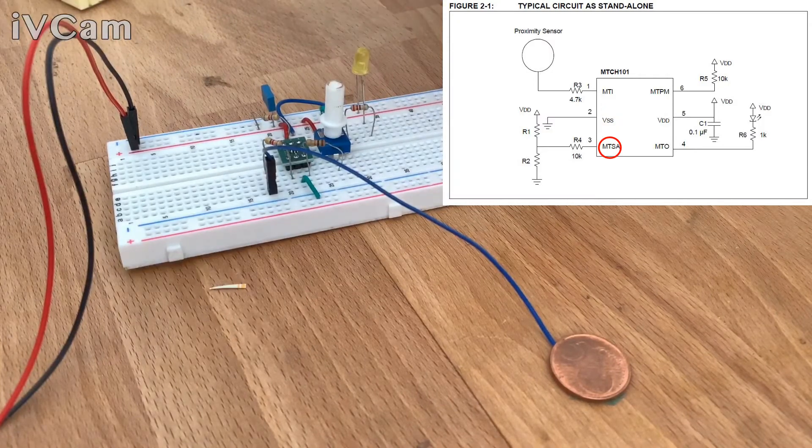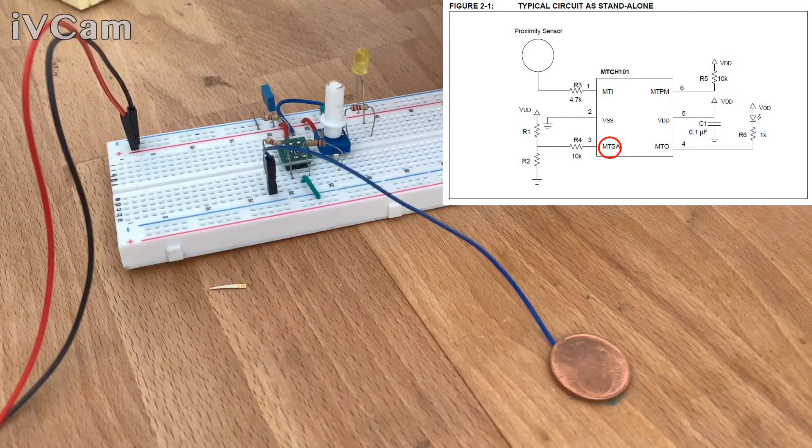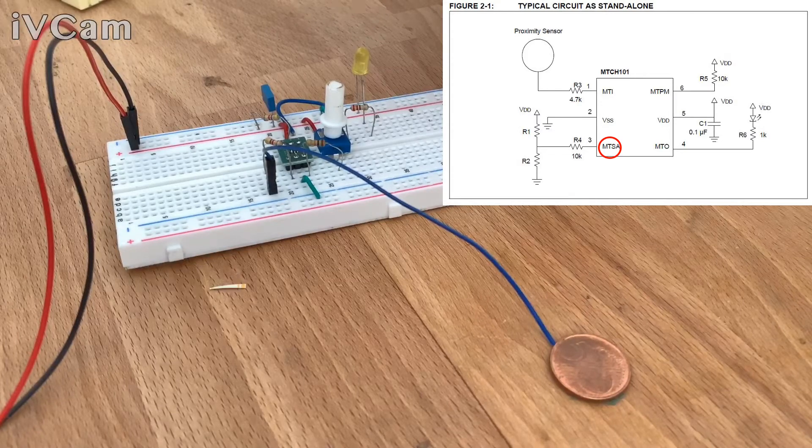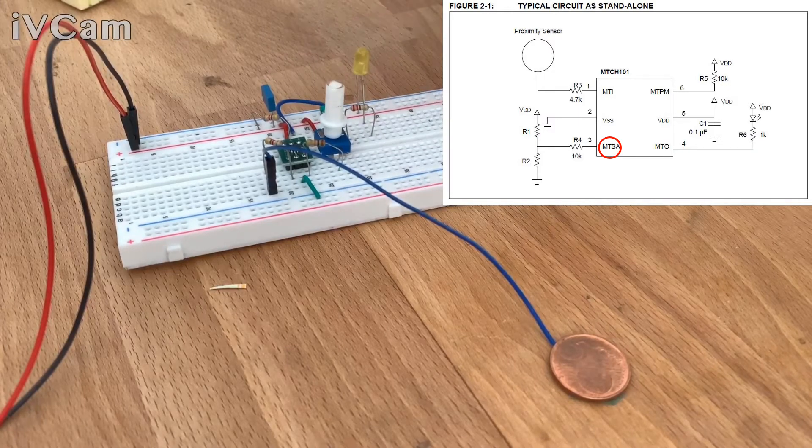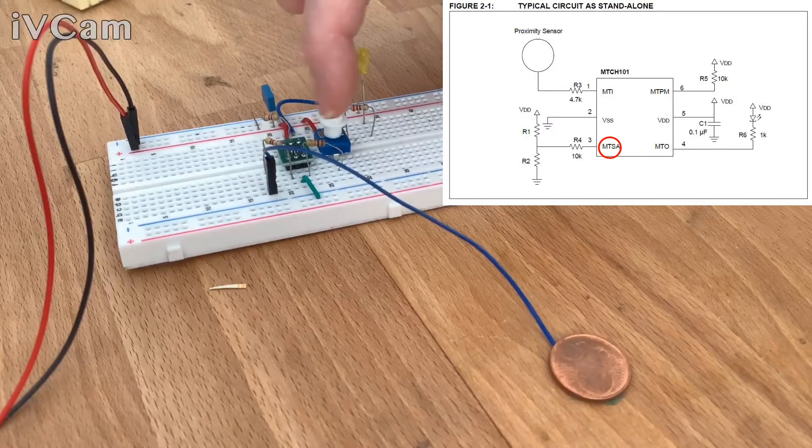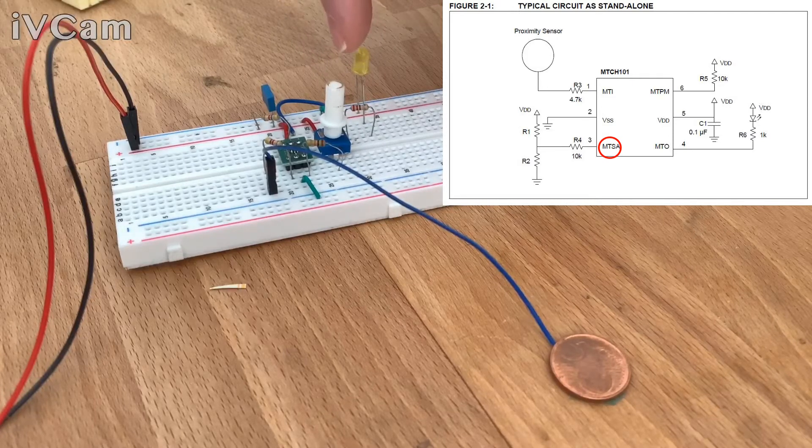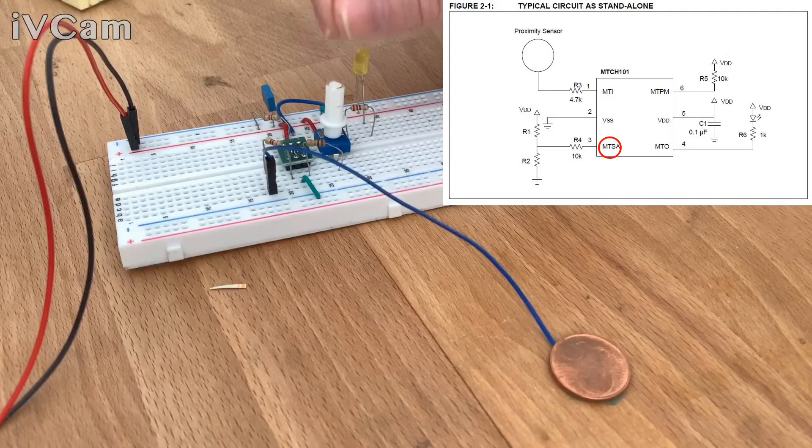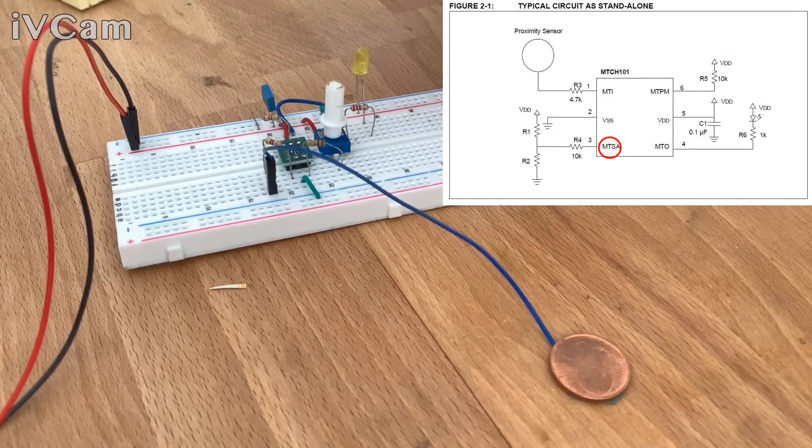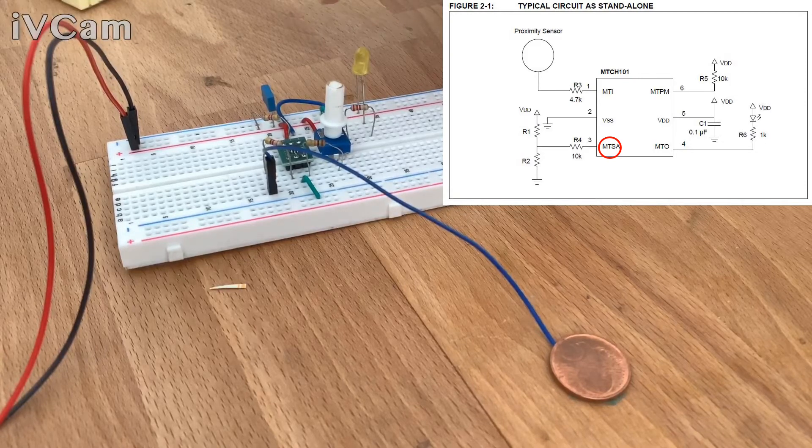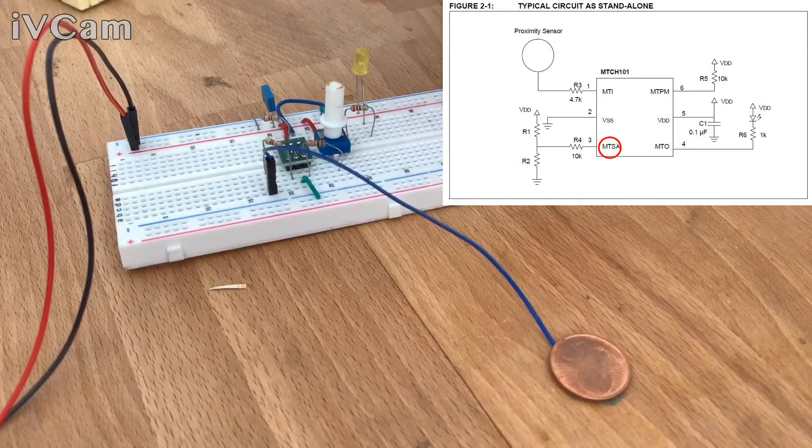Then we have the third pad, which is probably the most important one, because it's the pad allowing you to set the sensibility. It is connected to a trimmer, or let's say a potentiometer, via a resistor which is 10k, and moving the potentiometer, and so changing the value of the resistance, this change also the sensibility of the touch, of the capture of the touch.